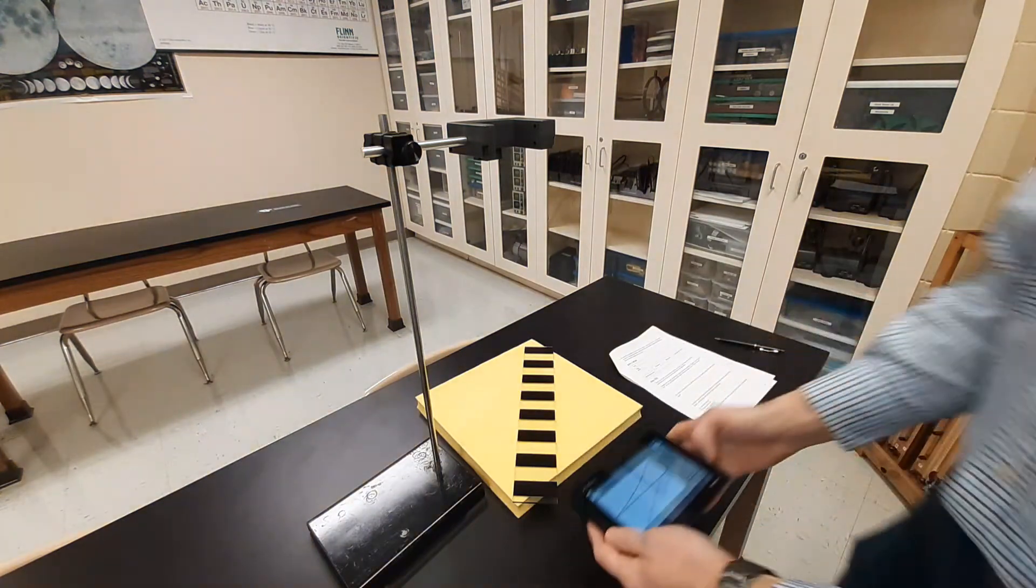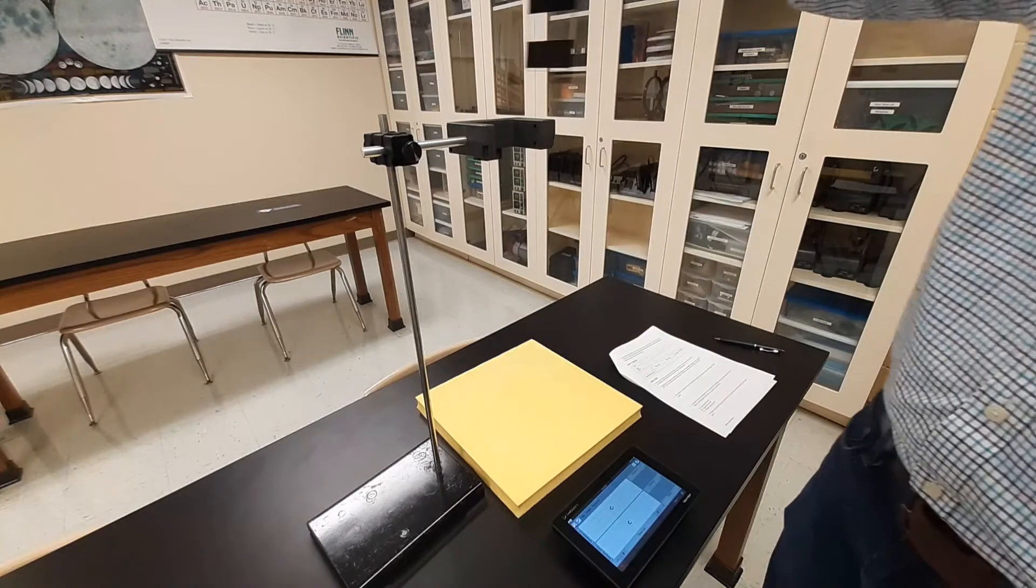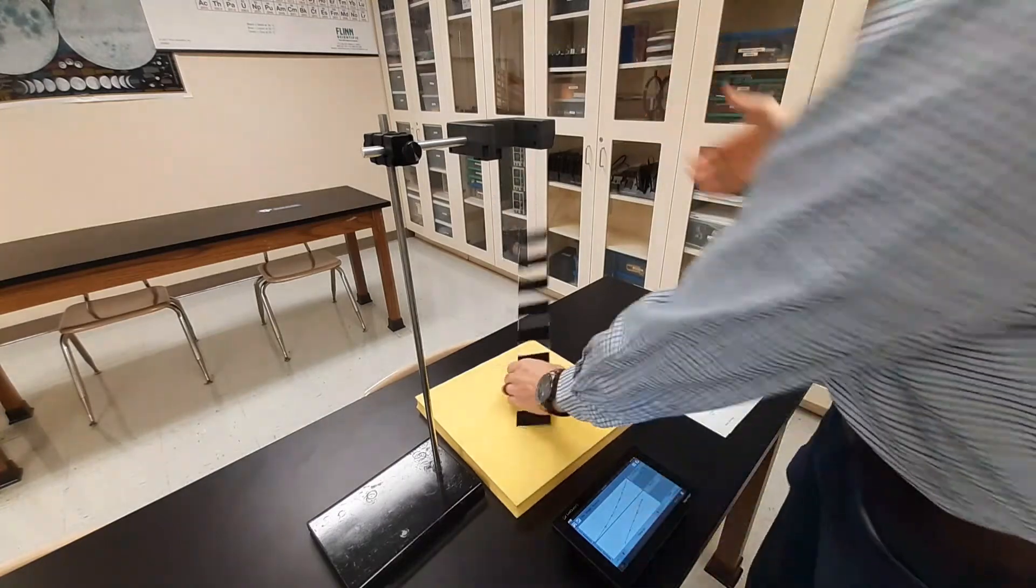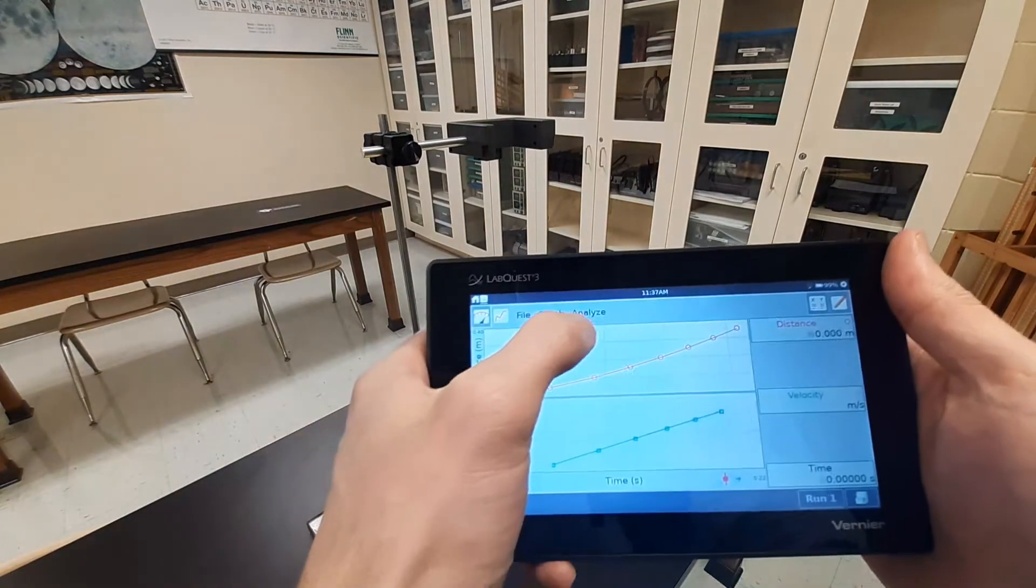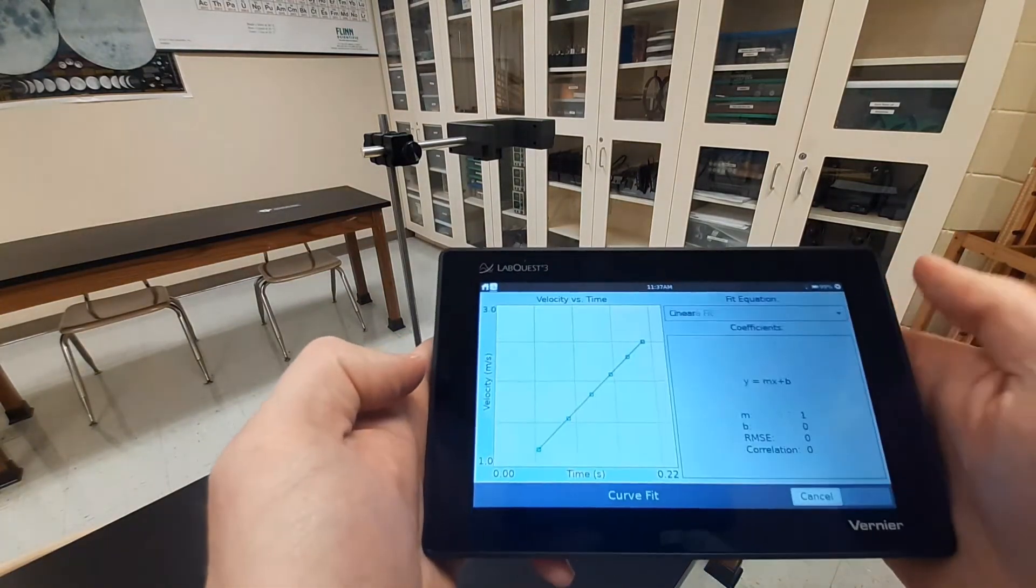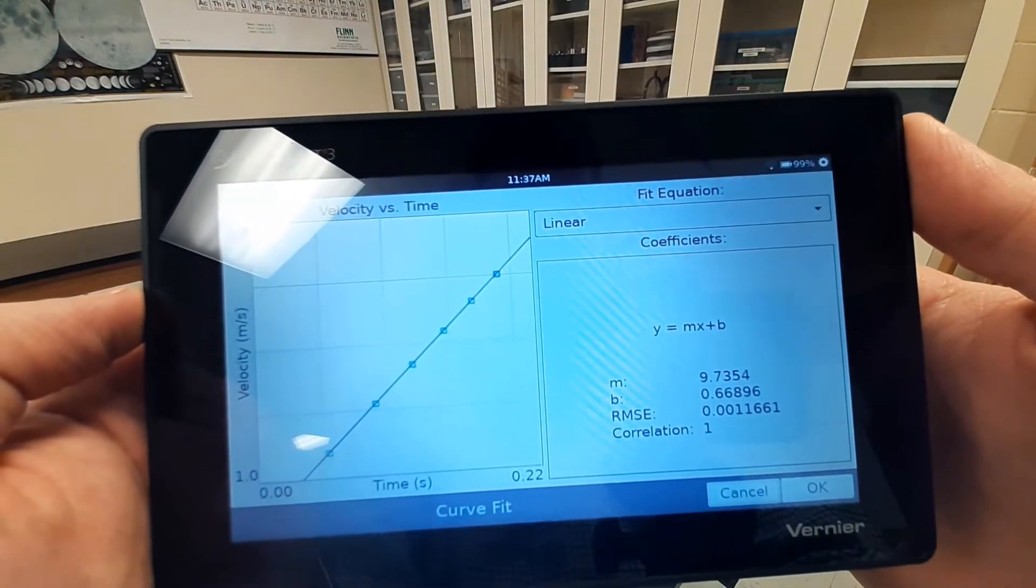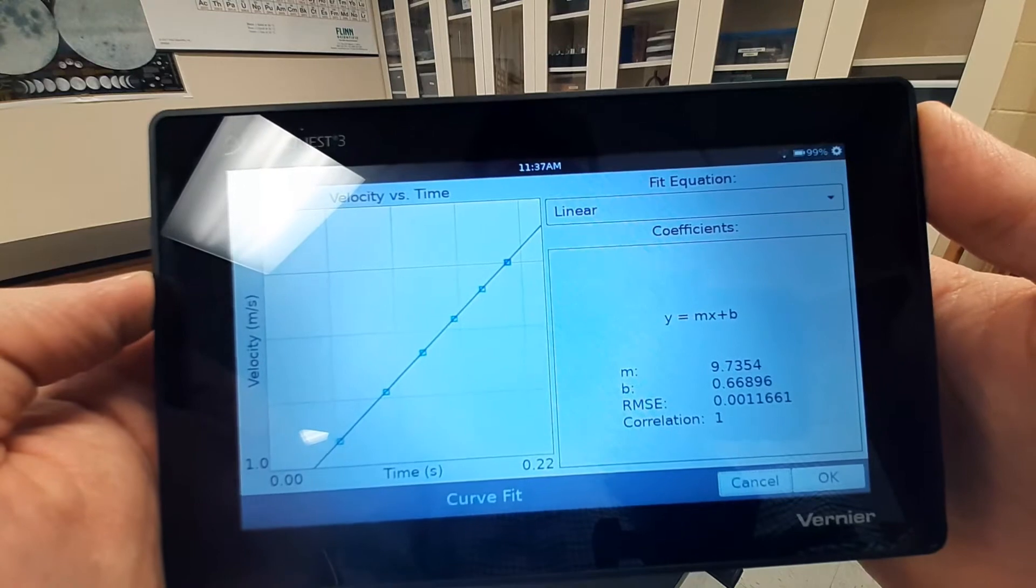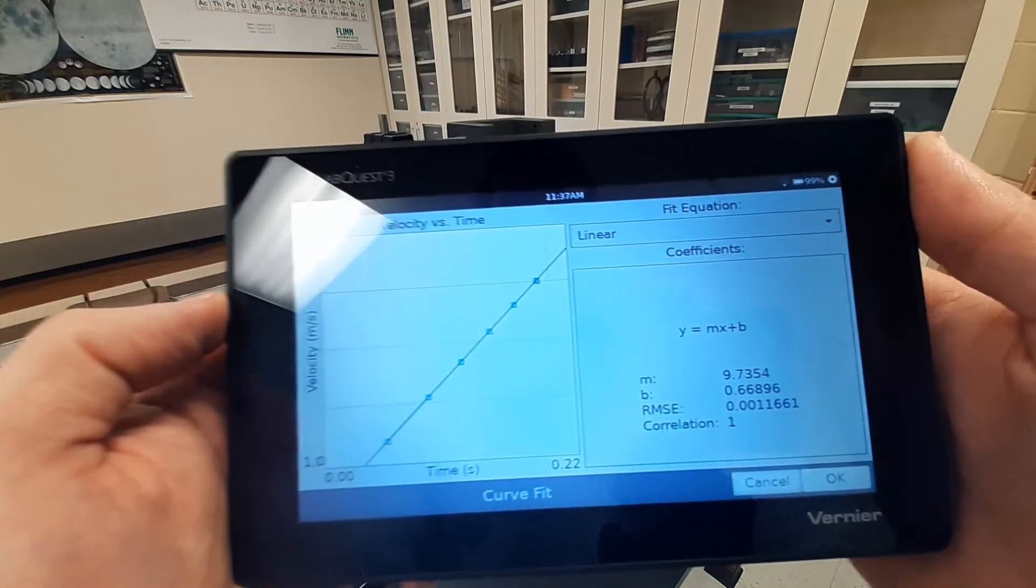I'm going to get ready to do it again for trial number three. Drop it right down through there. Again, very similar looking graph. That's good. Consistency is what we want. This time we got a slope 9.7354. That was trial number three. Three more to go.